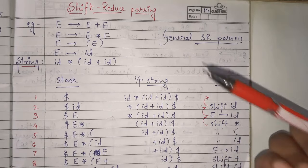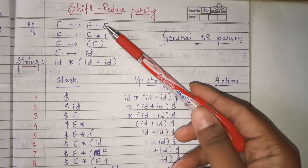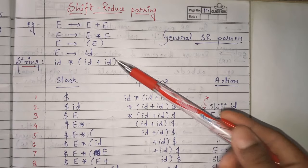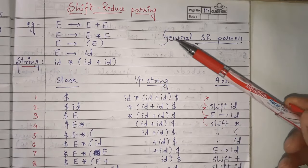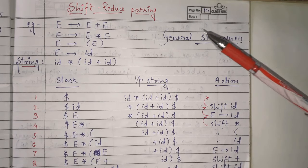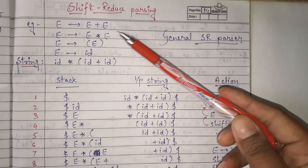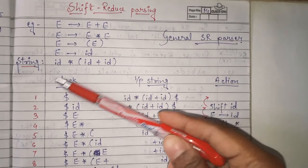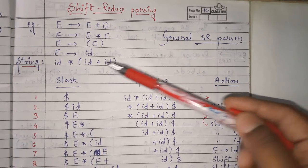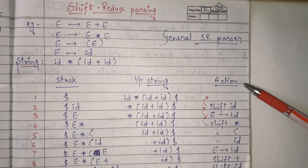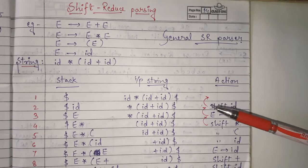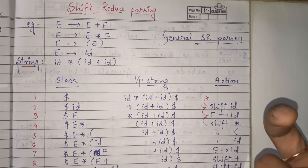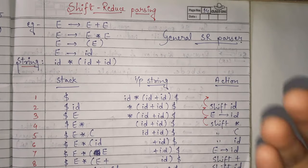In shift-reduce parsing, what type of question is asked? You will be given one grammar, one string, and then you will be asked to parse that string with the help of a general shift-reduce parser using the given grammar. For that, we maintain one stack and one input string, and we perform actions on it. There are four main actions: shift, reduce, accept, and error.